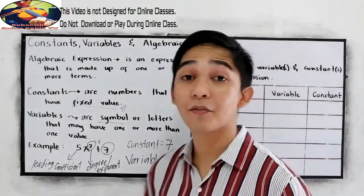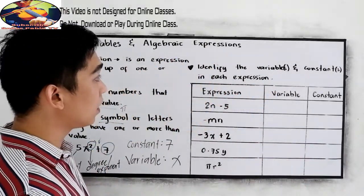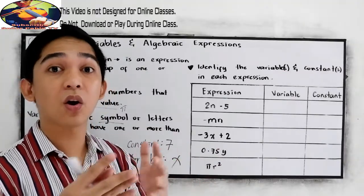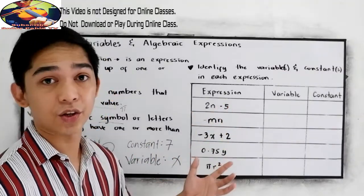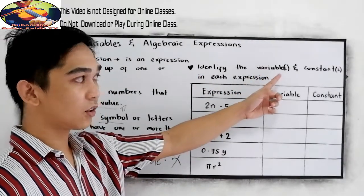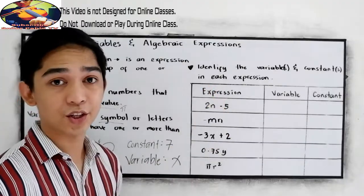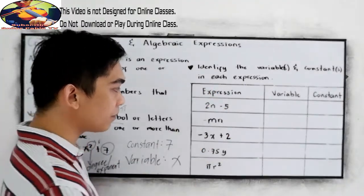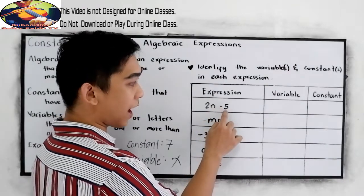Now, let's have this example. We're going to identify the variable and the constant in each expression. So our expression here, number 1, 2n minus 5.